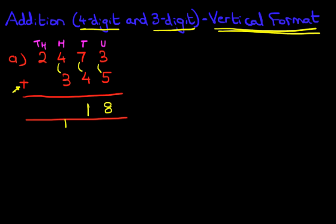The hundreds, what is 4 plus 3? 4 plus 3 is 7, but we've got one here. So, 7 plus 1 is 8. The thousands do not change, because we're adding 2 to 0. So, the answer is 2,818.